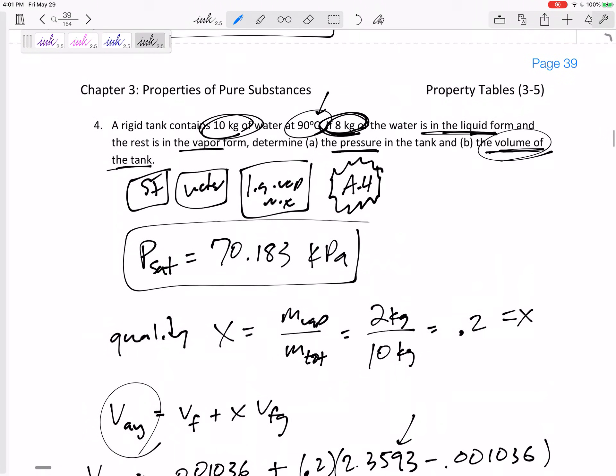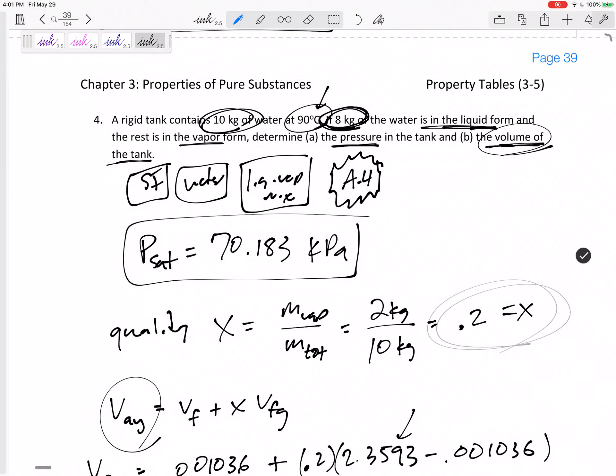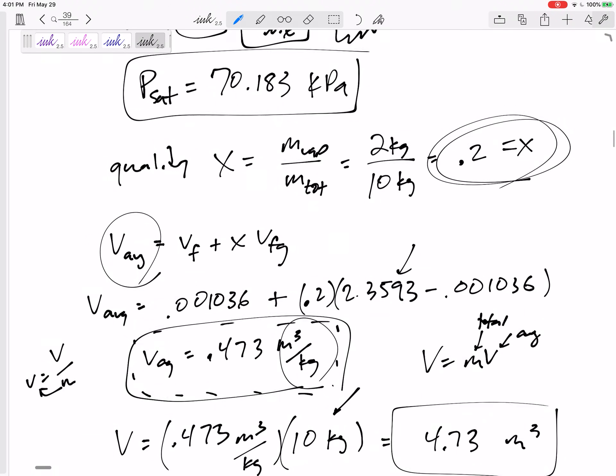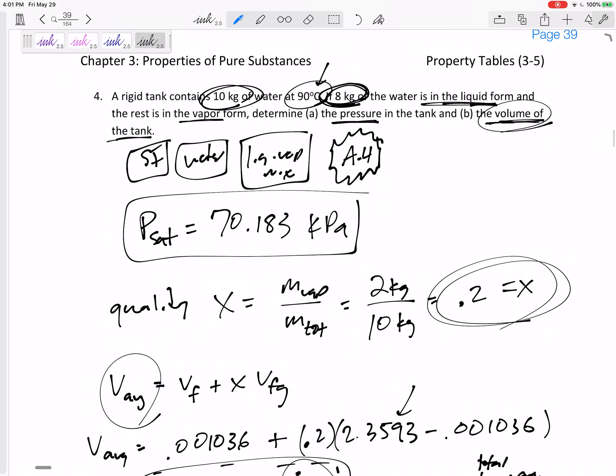So let's take a step back and look back. I had to make sure I was in the right property table. I knew it was a mixture. I could calculate the quality just by giving the masses that they told me. Then I used V equals VF plus X VFG to find the average specific volume. If it was a homogeneous mixture that all the particles had an average specific volume of that, then I'd take the mass of all the particles to get the volume. Remember that property tables give you specific volume. Many times though, you are asked for total volume.